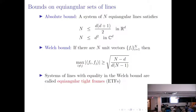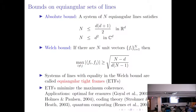Systems of lines where equality in the Welch bound is attained are called equiangular tight frames. When equality is attained, the inner product between any two vectors takes the same value — this bound in absolute value. Thinking of the inner product as a measure of coherence between distinct vectors, this bound tells us this is the best that can happen. Equiangular tight frames, when they attain this bound, actually minimize the maximum coherence.